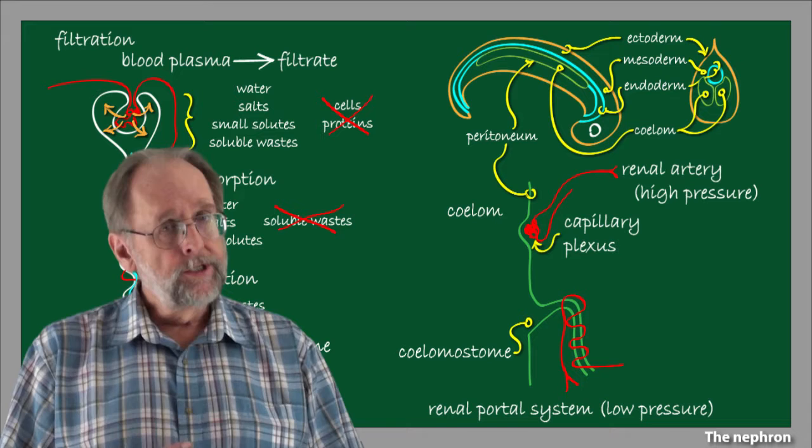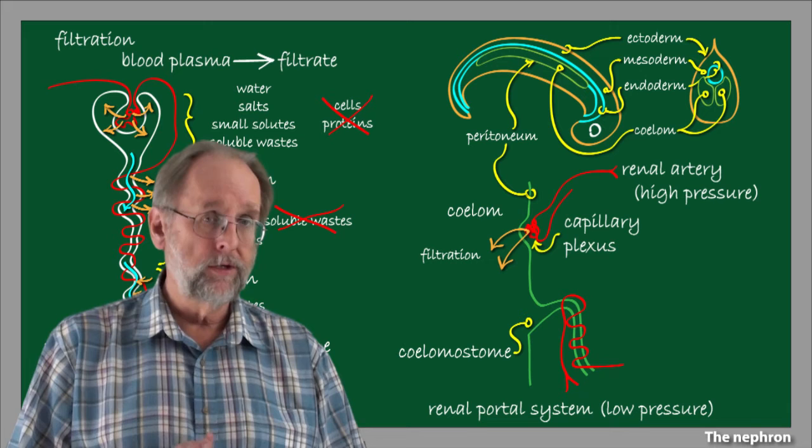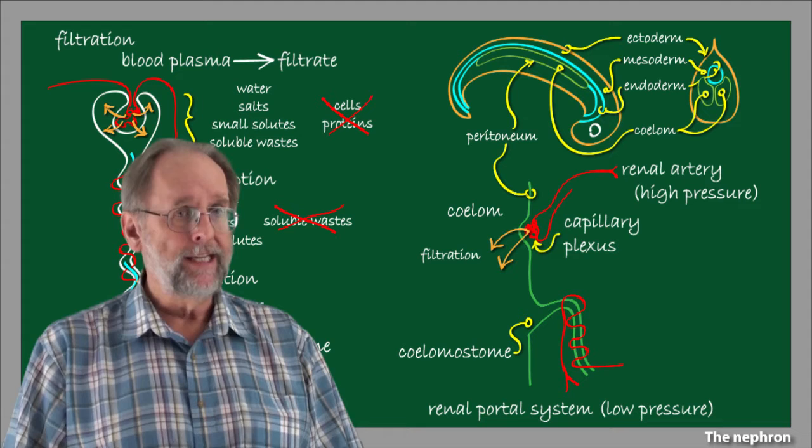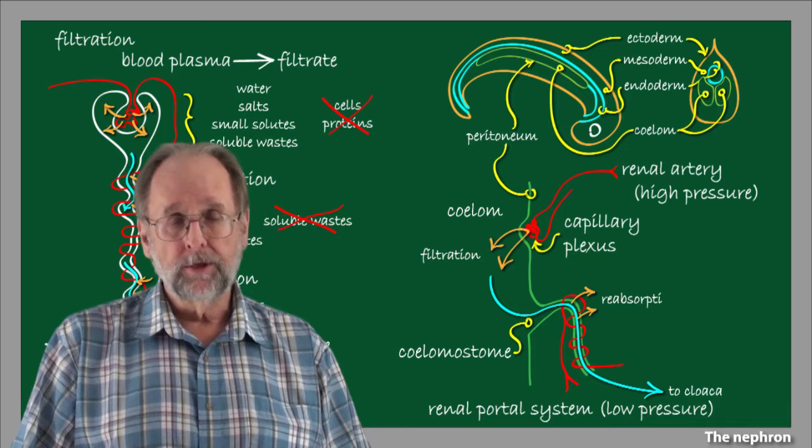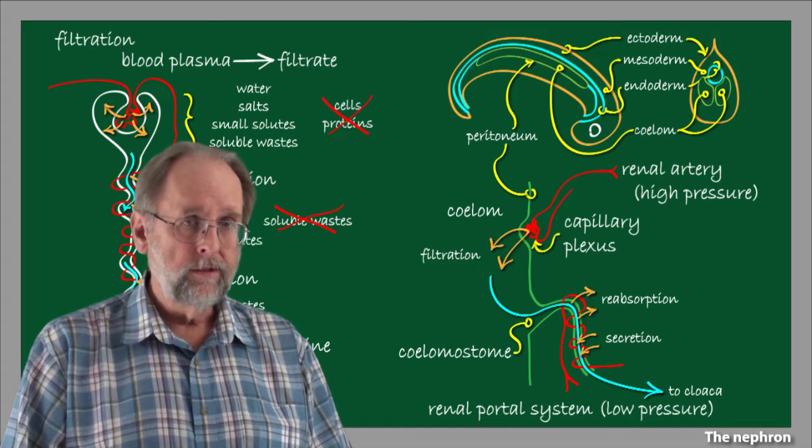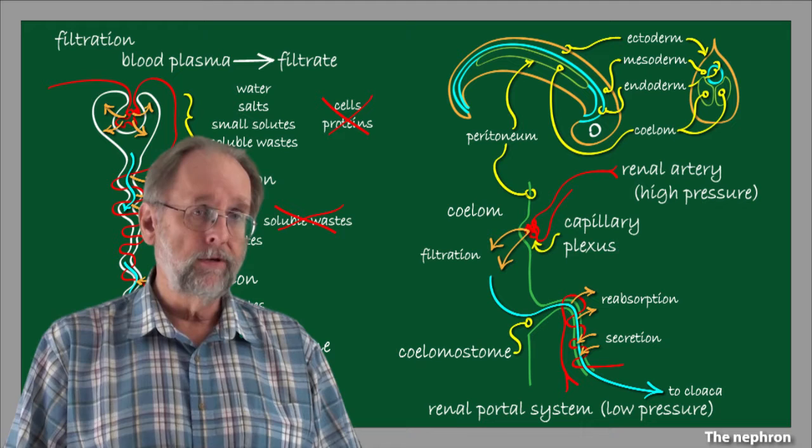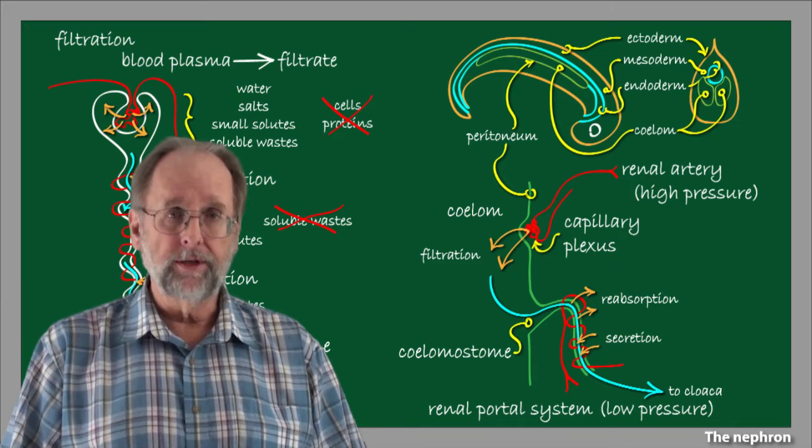The original function of the capillary plexus was to produce coelomic fluid by filtration across the peritoneal wall. As coelomic fluid, filtrate really, accumulated in the coelom space, it was drained via the coelomostome. As this fluid passed through the tubular structures and out to the cloaca, reabsorption and secretion took place there. Thus the three functions, filtration, reabsorption and secretion, which are combined into one structure in the fish nephron, were originally separate functions fed by two distinct parts of the circulation.